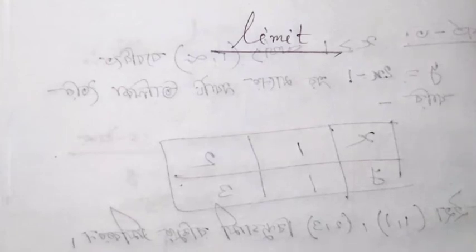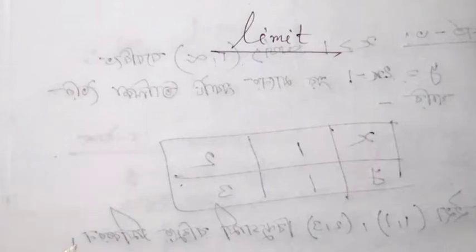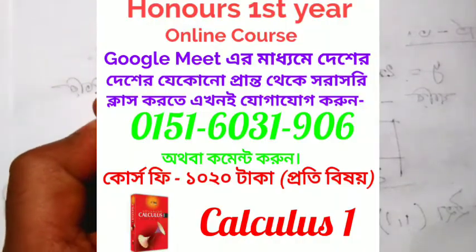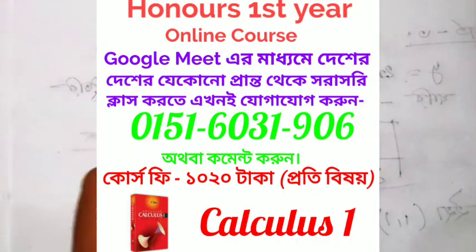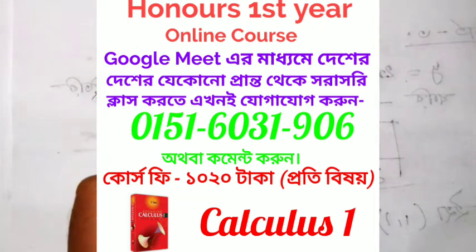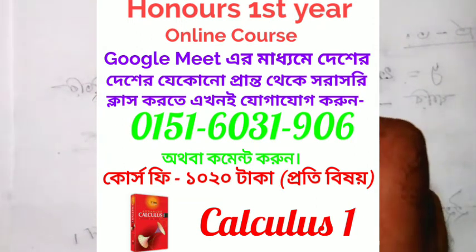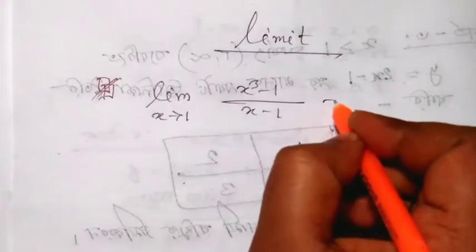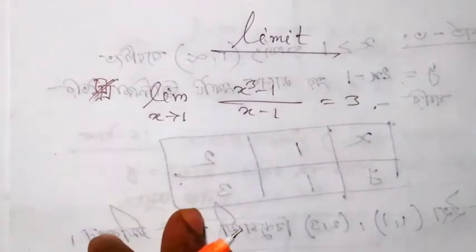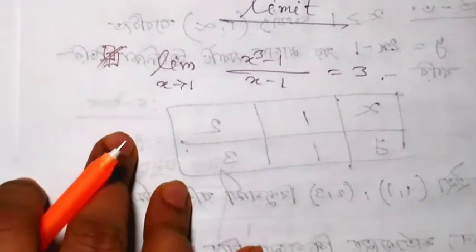Assalamualaikum. This is the first time I am going to talk about the limit, chapter 2a, Calculus 1. This material is the limit as x tends to 1 of x-cubed minus 1 divided by x minus 1, which is equal to 3. This is the solution we are going to look at.